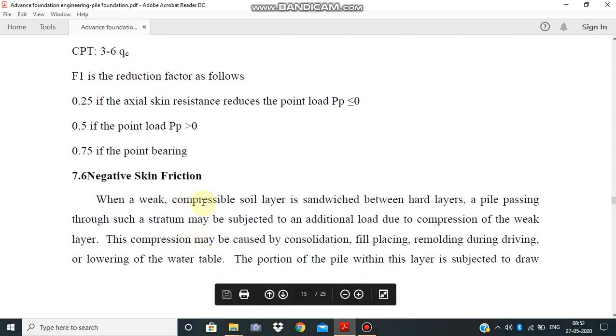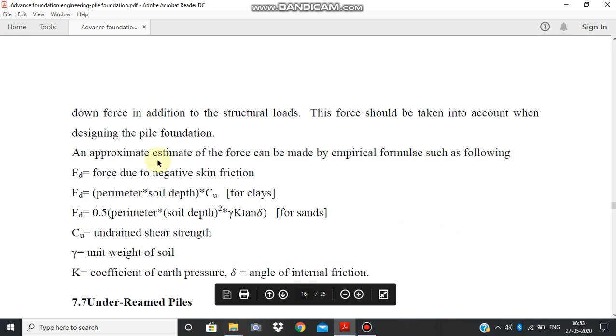Next topic is negative skin friction. What is negative skin friction? Actually, what happens is when a weak compressible soil layer is sandwiched between hard layers, that means one soft layer between two solid layers, when the pile is put through the layer, in which direction the pile is put? It will be put vertically downward. This compression may be caused by consolidation, fill placing, remolding during driving, or lowering of the water table.